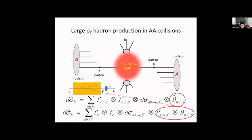In AA collisions, a hot and dense quark-gluon plasma is produced, and the produced hard partons interact with the medium through elastic scatterings and radiative processes. To take this into account, one must calculate the probability functions: a parton G initially produced from the hard scattering, after interacting with the plasma, produces a parton G-prime which can have a changed flavor or changed momentum. This probability function is calculated in the LBT formalism.